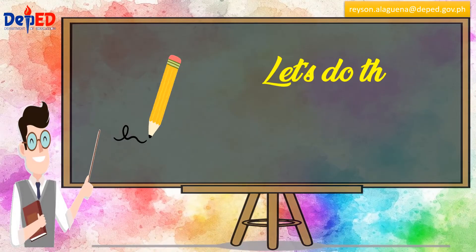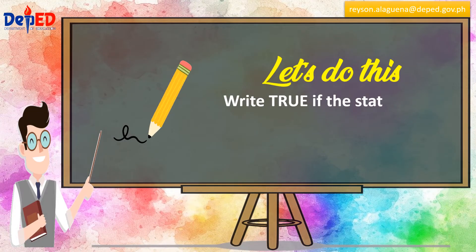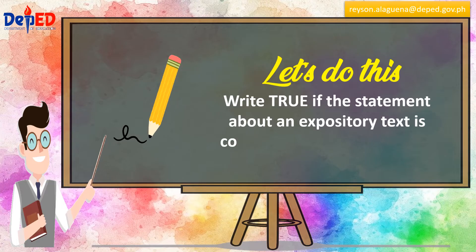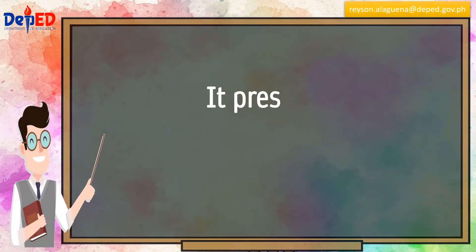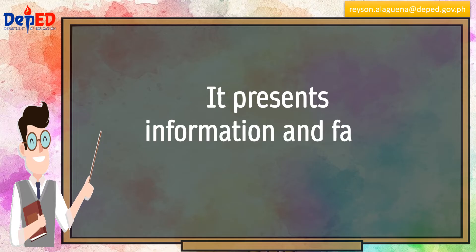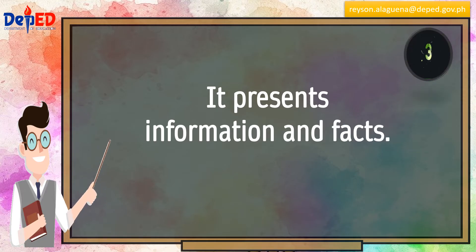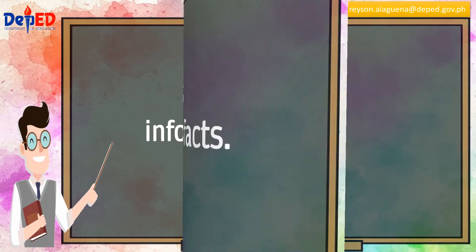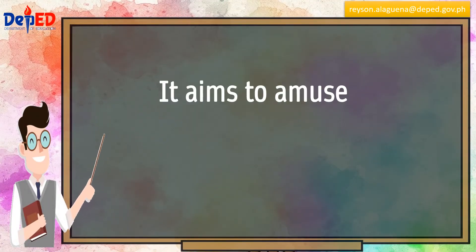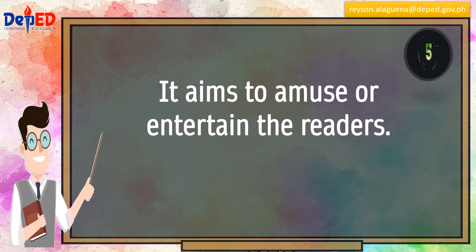Let's do this. Write true if the statement about an expository text is correct and false if it is not. Statement: It presents information and facts. The answer is true. Statement: It aims to amuse or entertain the readers. The answer is false.